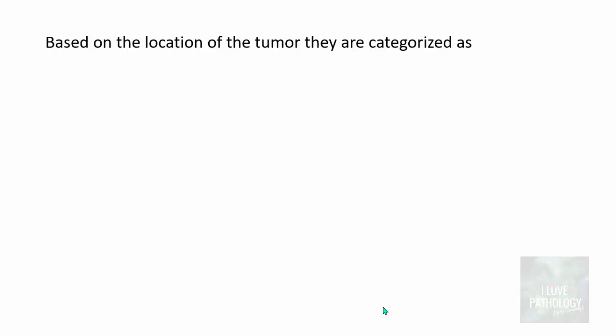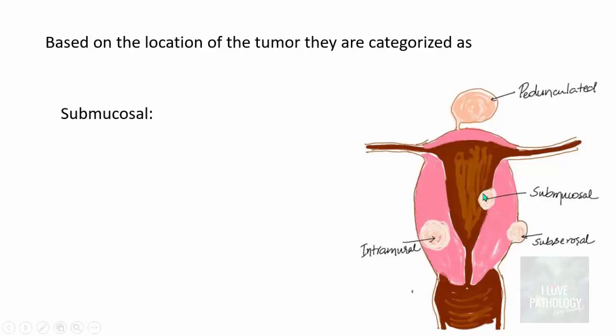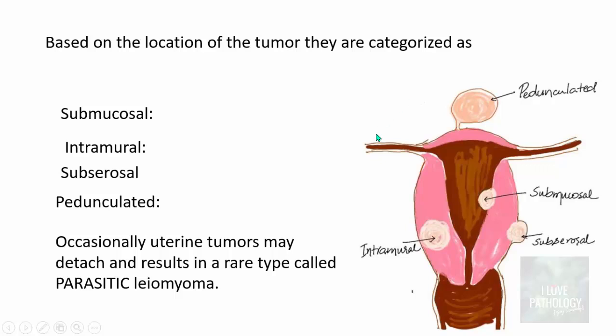Now based on the location of leiomyoma they can be grossly morphologically categorized as submucosal leiomyoma. If it protrudes into the endometrial cavity with the lining of endometrium they are called submucosal leiomyoma and intramural purely within the uterine myometrium. They are intramural leiomyoma and if it is just beneath the serosa they are called subserosal. Sometimes they can be pedunculated with a very short pedicle they grow and they are called pedunculated leiomyomas. Occasionally sometimes these tumors may detach and grow in some other place and that is called as a parasitic leiomyoma.